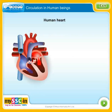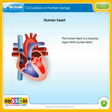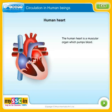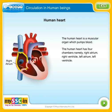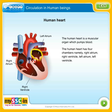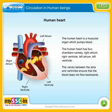Circulation in human beings: the human heart is a muscular organ which pumps blood. The human heart has four chambers, namely right atrium, right ventricle, left atrium, and left ventricle. The walls between the atria and ventricles ensure that the blood does not flow backwards.